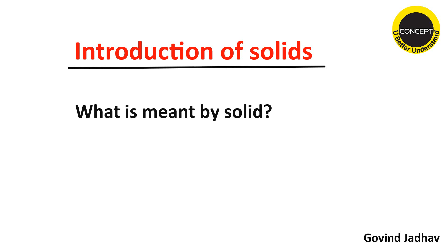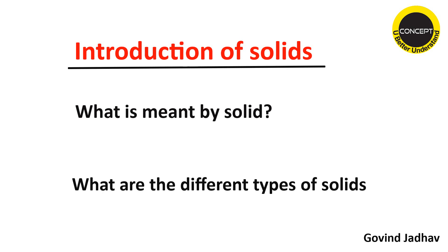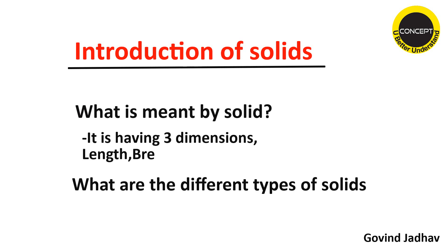First, let's have the introduction: what is meant by solid, and what are the different types of solids. A solid has three dimensions — it has length, breadth, and thickness or height. In planes we studied only two dimensions; in lines we saw only one dimension, that is length; for a point there is no dimension. But for a solid there are three dimensions: length, height, and breadth or thickness.